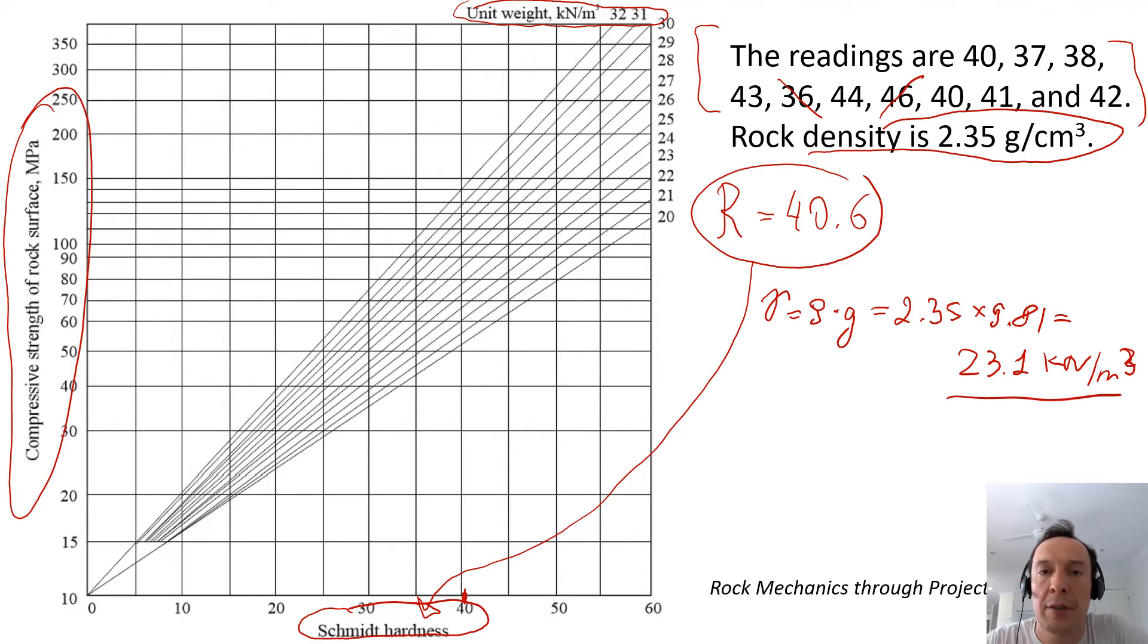Our next step is we're going to find this line on the right-hand side that correlates to 23.1. Here we have 23 unit weight, so we have a point here where the unit weight of 23.1 crosses the imaginary line of Schmidt hardness which is 40.6. Now we're just going to see how much we have here on the left-hand side, and this is going to be the unconfined compressive strength. To me it's about 67-68. I'm going to write UCS, unconfined compressive strength, about 68-69.